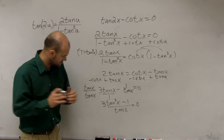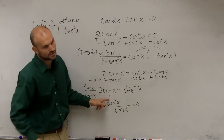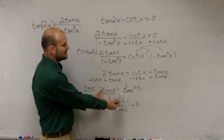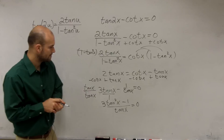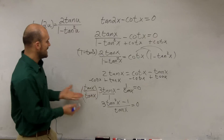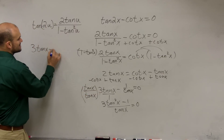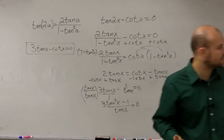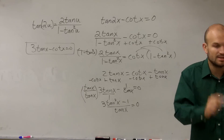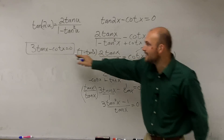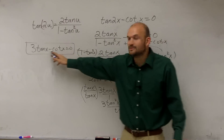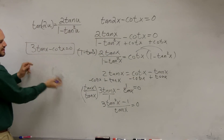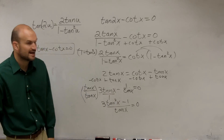I multiplied to get common denominators because I need to combine tangent and cotangent. Over here the denominator is tangent, and over here it would be 1. So with common denominators I have 3 tangent squared of x minus 1 over tangent of x equals 0, which means the numerator 3 tangent squared of x minus 1 equals 0. Remember, we're either solving by isolating, factoring, or combining like terms.